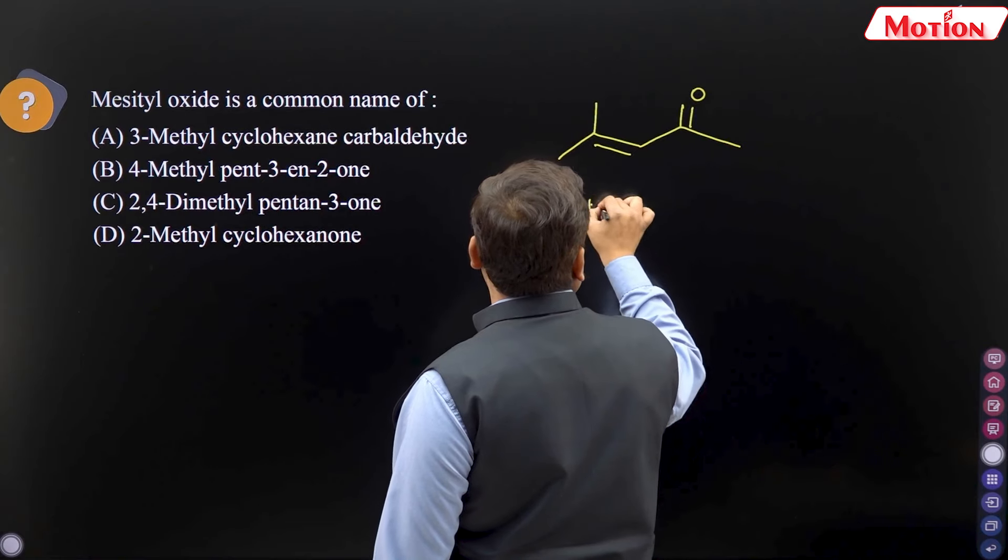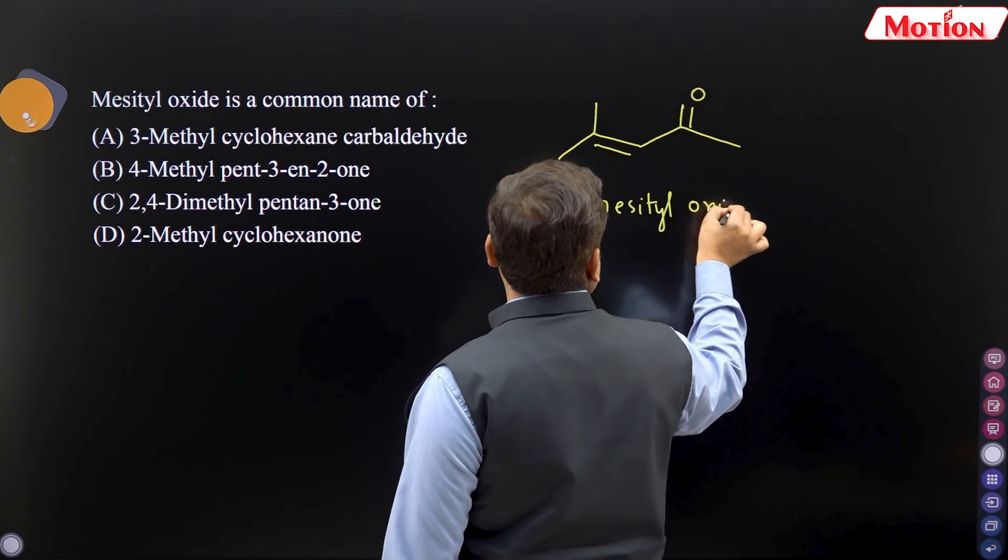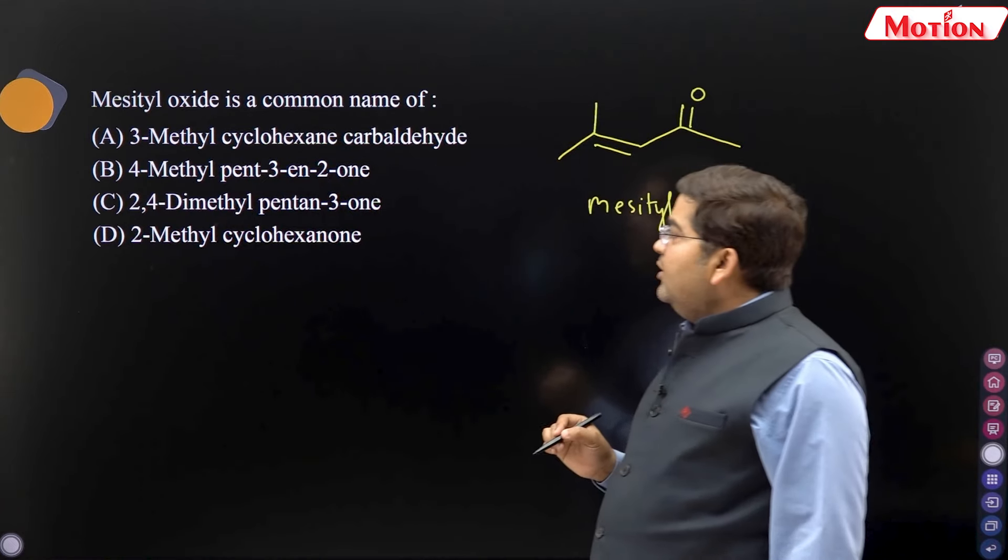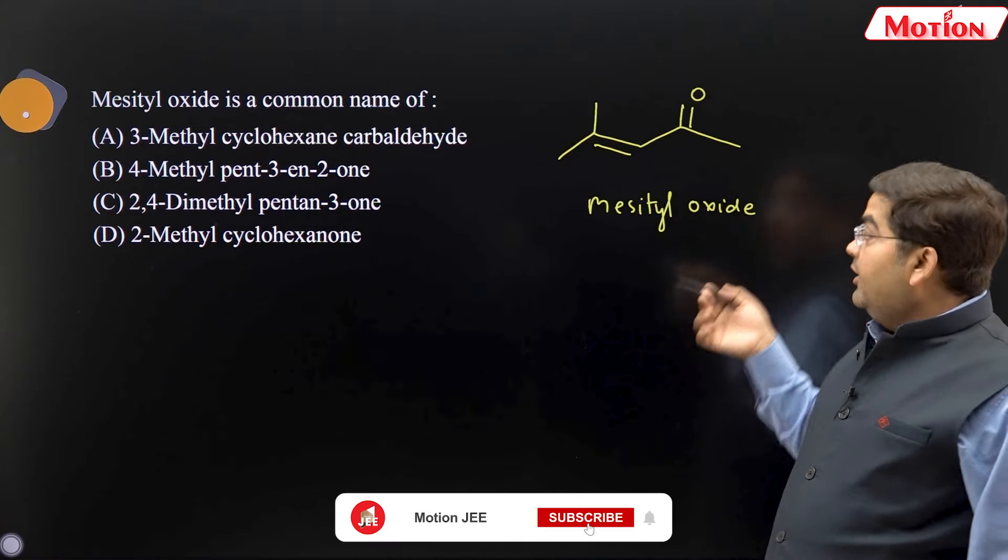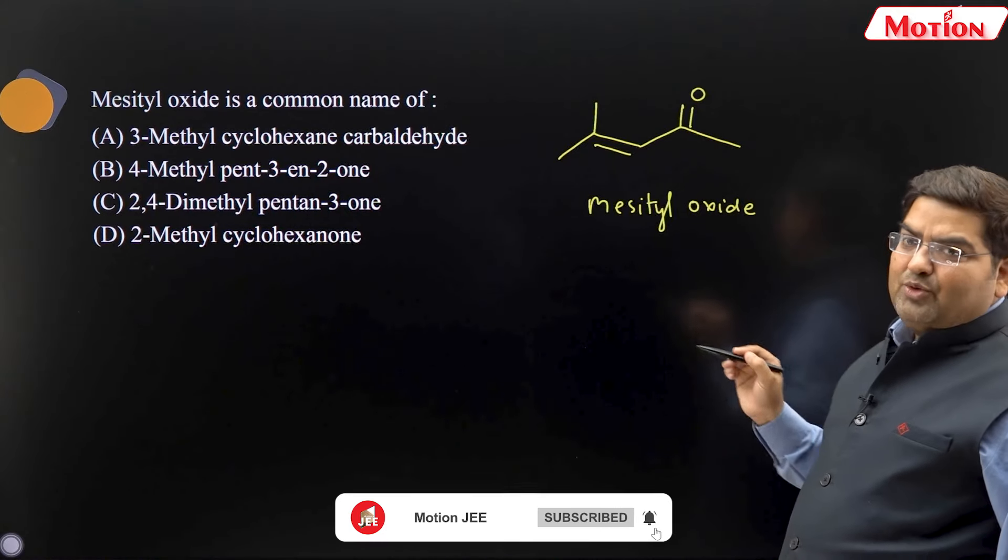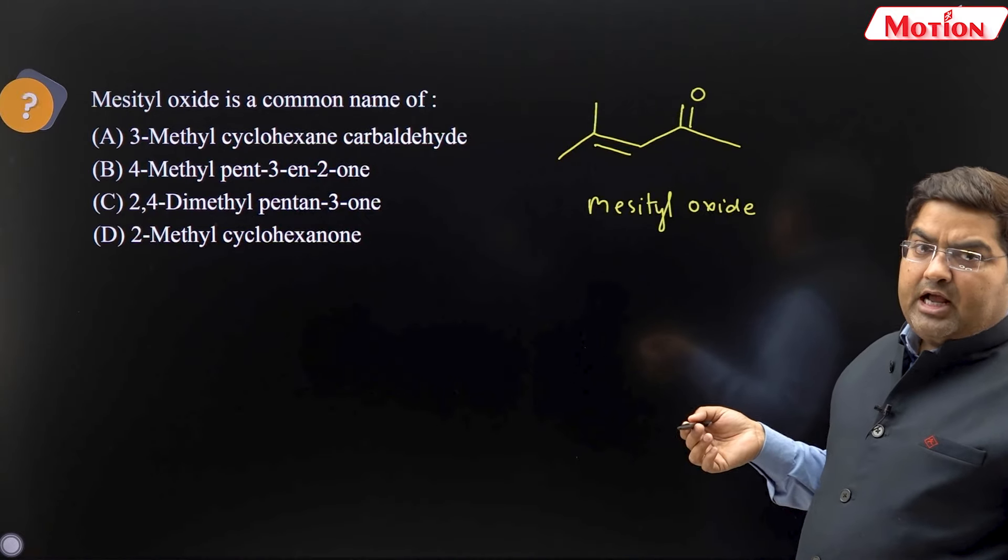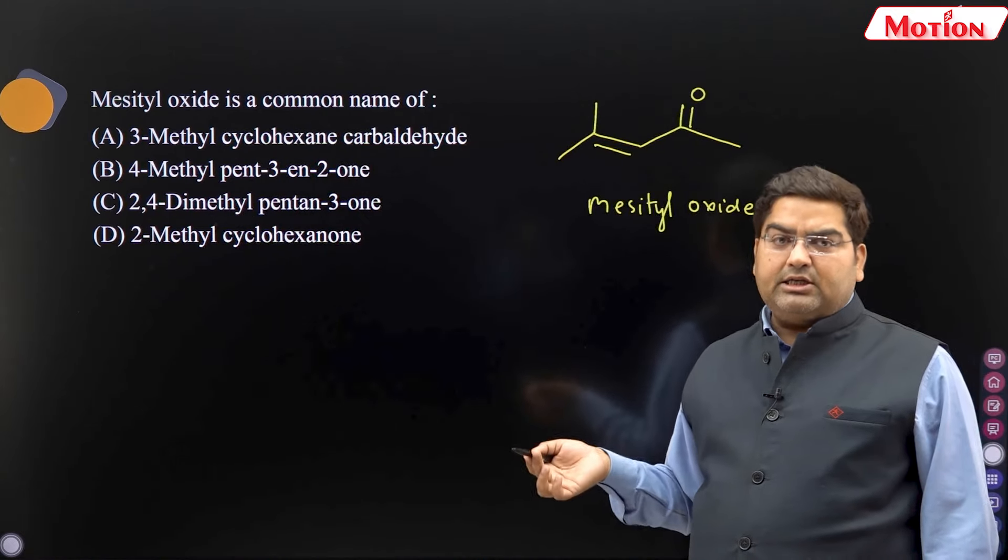Structure me btate roo, mesityl oxide ka. So it is called mesityl oxide. Ab bachchang ko ye structure hi nne hi btata ta. Or ye structure nne hi btata ta. Haa, ye structure diya ho ta, toh bach simple question hai. Ye bhebhkul aisa hi ho ta, ethylidine diachloride jai sa naam ho gaya. Ethylidine diachloride joh ta, uska structure nne hi dya.